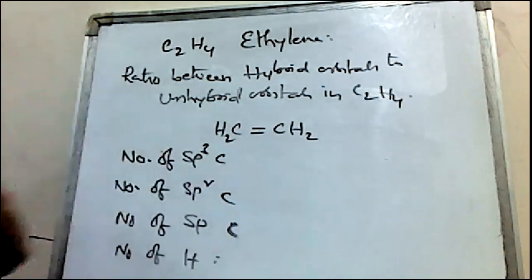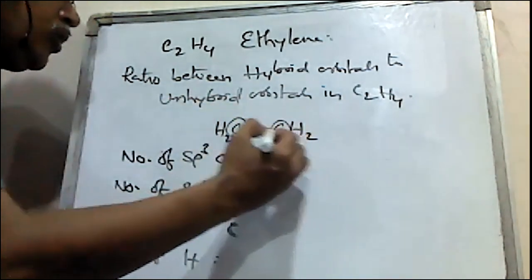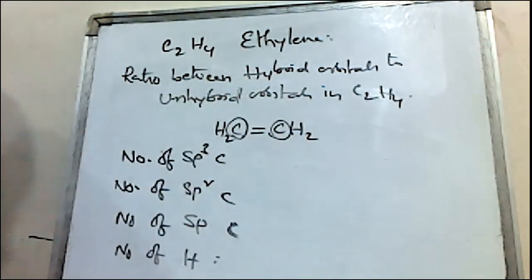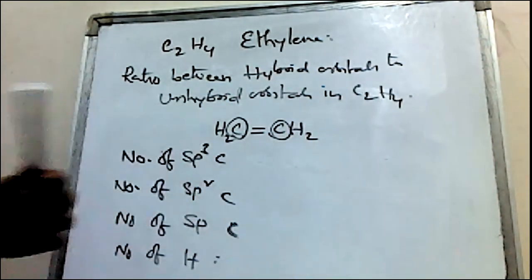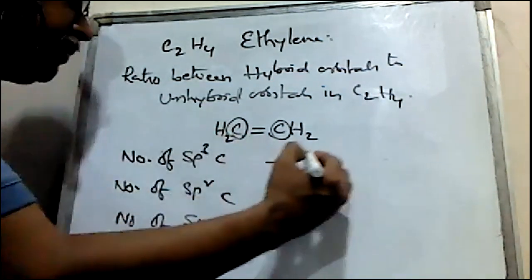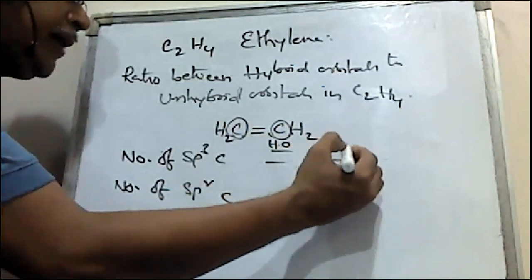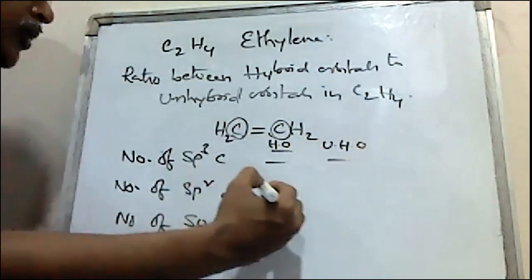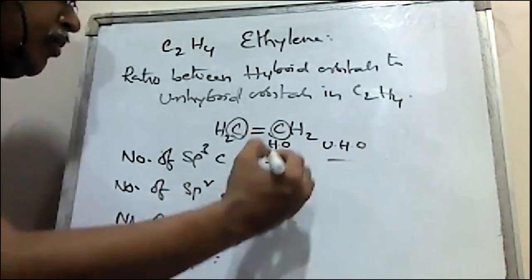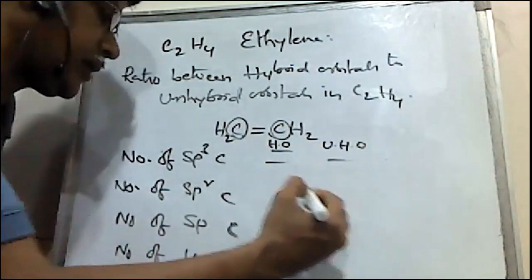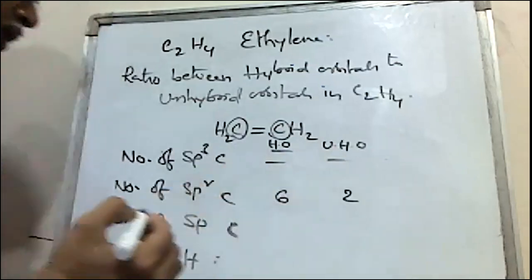If we consider two carbons, there are two carbons in C2H4. Each sp2 carbon contributes three hybrid orbitals, giving a total of six hybrid orbitals from two carbons.